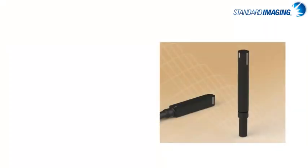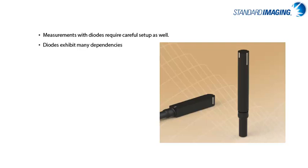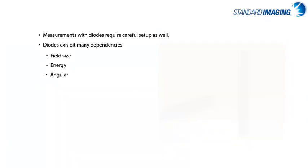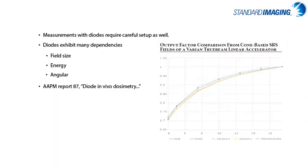Diodes are another tool that physicists often use in the clinical setting for output factor measurements or scanning of beam profiles. These instruments also require careful handling and setup. Just like all dosimeters, diodes do have dependencies such as field size, energy, and angular dependence. A very good reference for diode use is the AAPM Report 87, and although it's focused on in vivo measurements with diodes, it still provides an excellent overview of diode characteristics and their use in the radiation therapy setting.